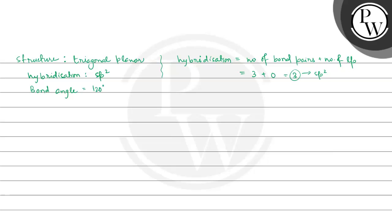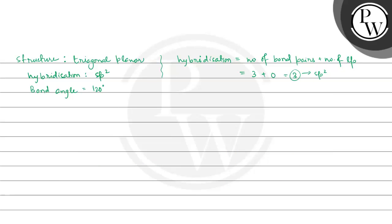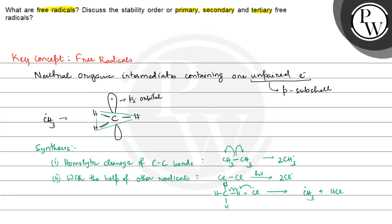Now we have to discuss the stability order of primary, secondary, and tertiary free radicals. The structures are: CH3CH2• (primary free radical), CH3CH•CH3 (secondary free radical), and C(CH3)3• (tertiary free radical). Free radicals are seven-electron species — carbon has three bond pairs plus one unpaired electron, so total electrons = 3×2 + 1 = 7.